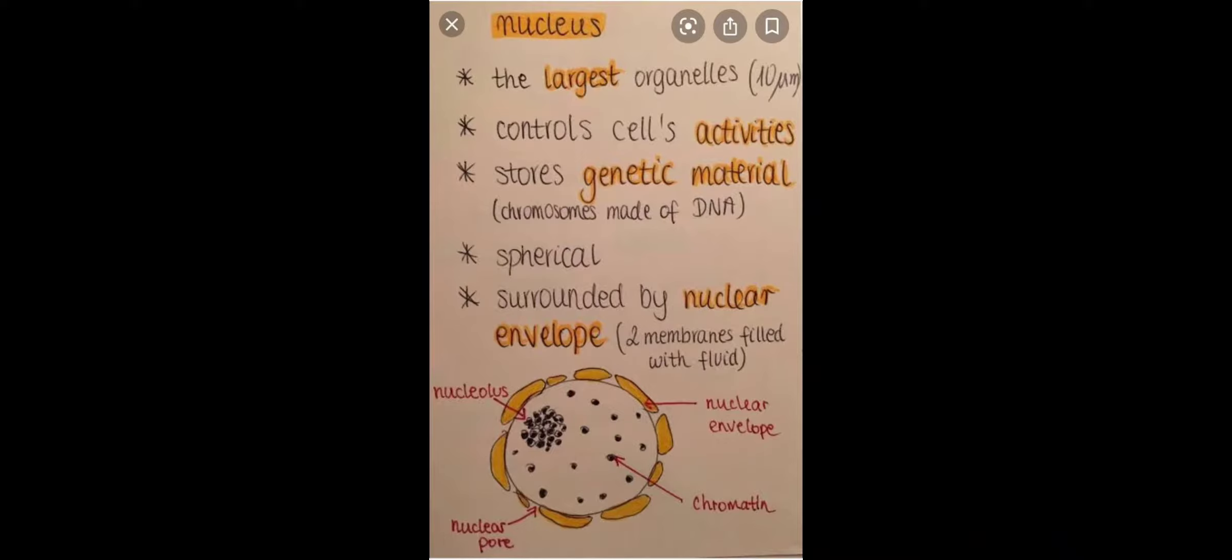It is spherical or round in shape and it has its own membrane which is known as nuclear membrane or nuclear envelope, which is double layered. On the basis of number of nucleus, a cell can be uninucleated with one nucleus, binucleated with two nuclei, and multinucleated with many nuclei.